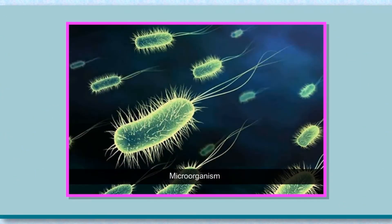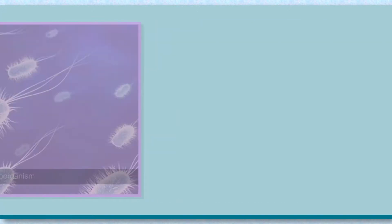In addition to plants and animals, there are different kinds of living organisms present all around us which cannot be seen with naked eyes. These are called microorganisms or microbes. These small organisms can only be seen and photographed with the help of an instrument called a microscope.